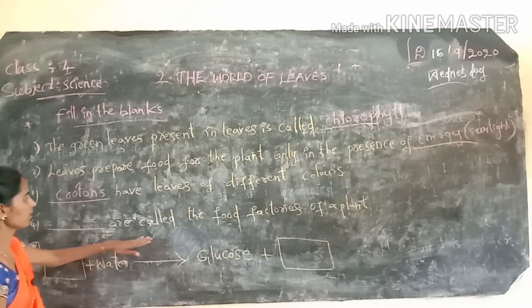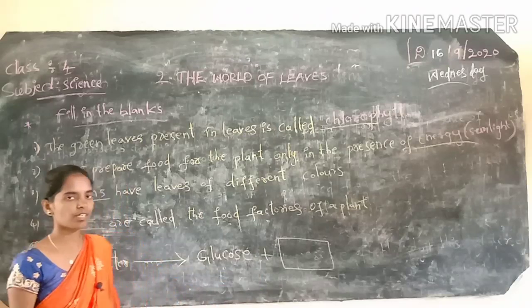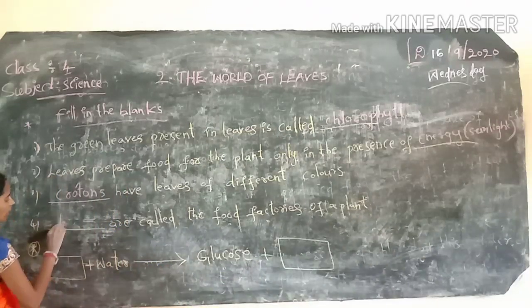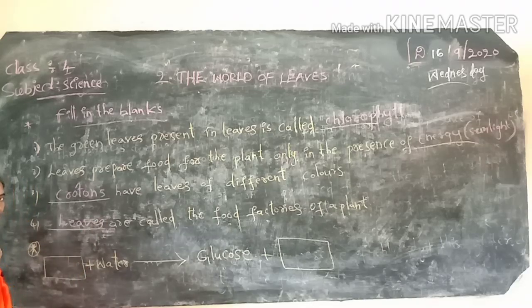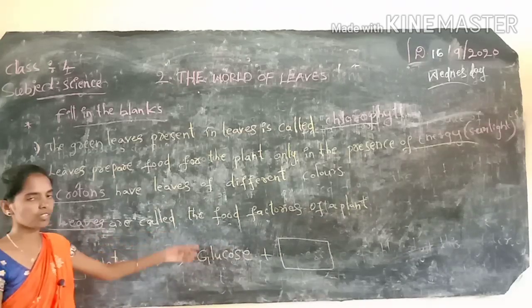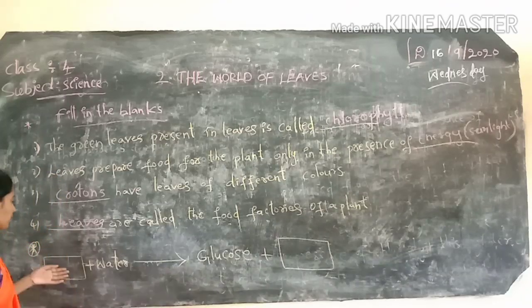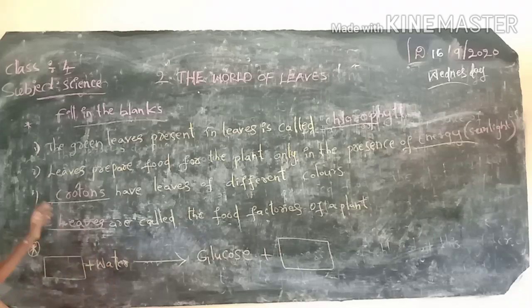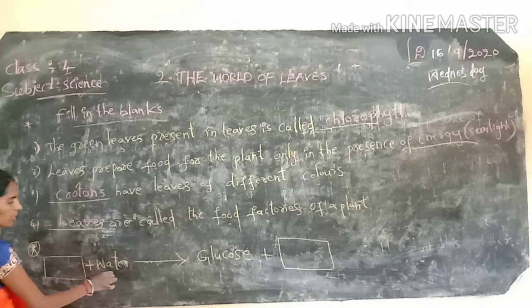Next: dash are called the food factories of the plant. Which parts? Leaves. Leaves are called the food factories of the plant.